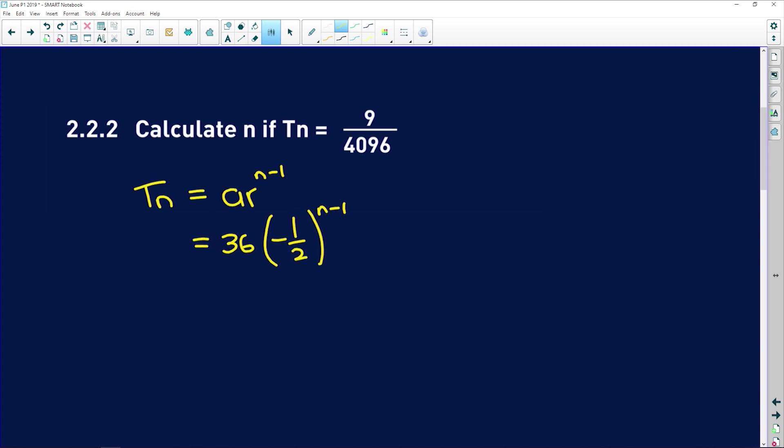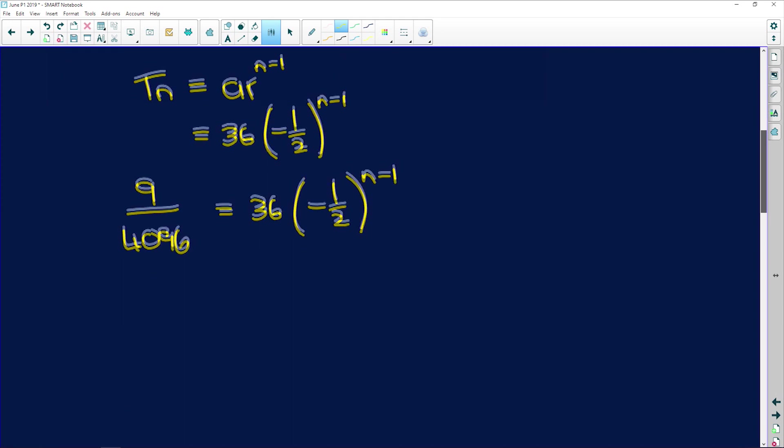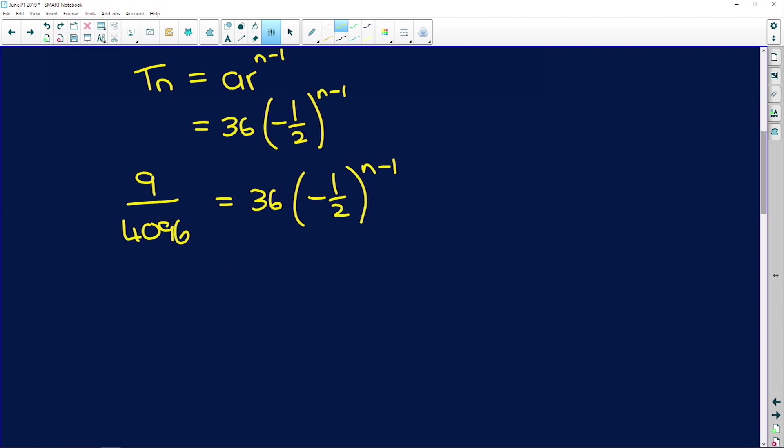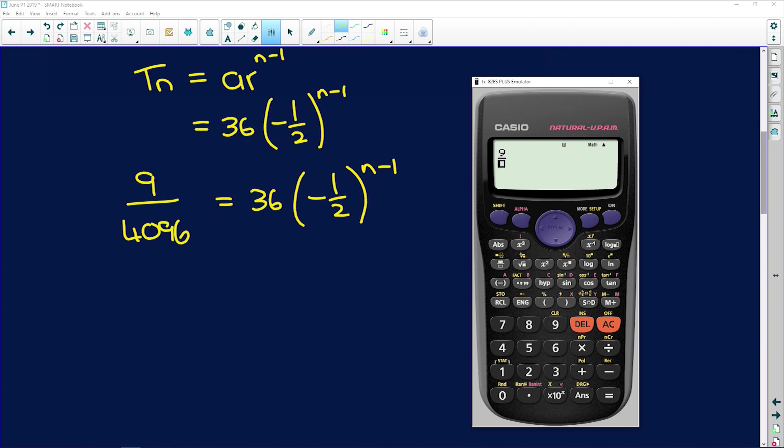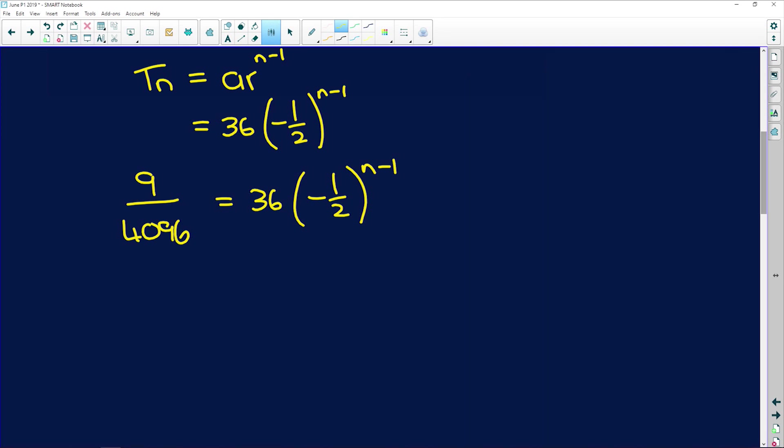So now, we're trying to find that n. We make this equal to the sum that we've been given. So 9 divided by 4096 is equal to 36 multiplied by negative 1 half to the power of n minus 1. Now, to try and isolate this exponent of n minus 1, I'm going to divide both sides by 36.